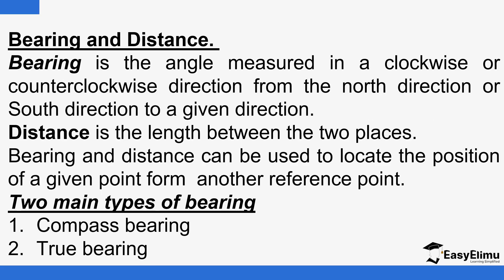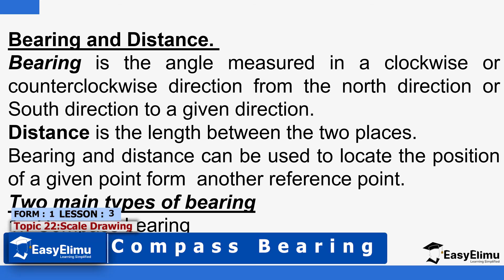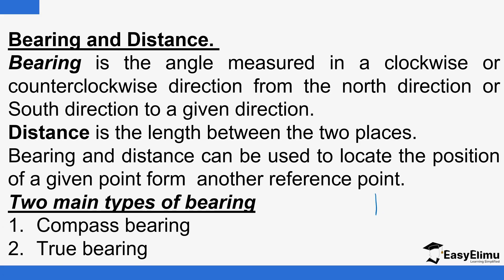So when you talk about bearing, what does it mean? Bearing can be described as the angle measured in the clockwise or counterclockwise direction from the north direction or south direction to a given direction. So you have a given point here, A. We have the four main points: east, west, north, and south. Maybe point B is here — if you join this point to B, what is the direction of B? The word 'from' is important: the direction of B from A.